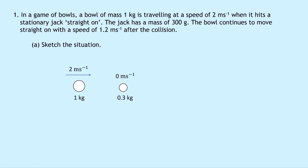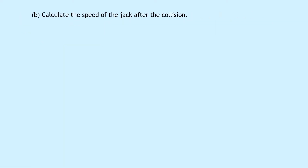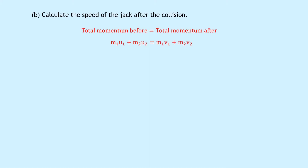That's before the collision. After the collision we've got our bowl of mass 1 kilogram moving to the right at 1.2 meters per second, and our jack of 0.3 kilograms moving to the right with some unknown speed V2. Part B says to calculate the speed of the jack after the collision — that's the speed V2. To do this we use the law of conservation of momentum: total momentum before equals total momentum after, written as M1U1 plus M2U2 equals M1V1 plus M2V2.